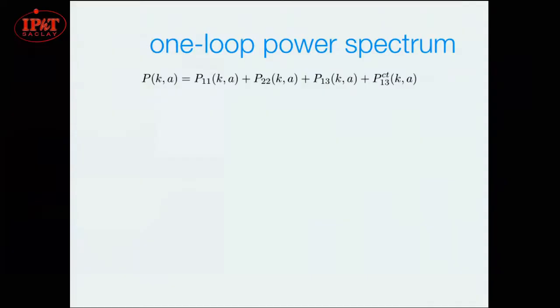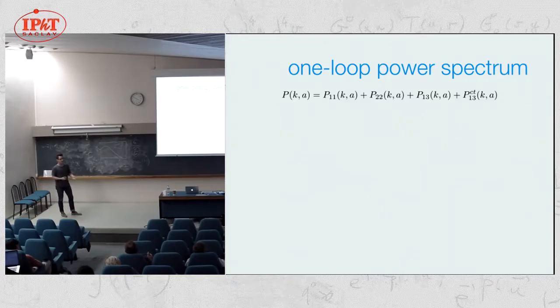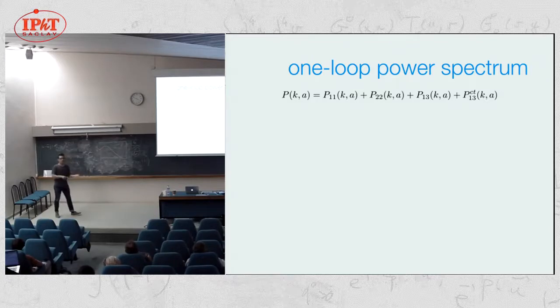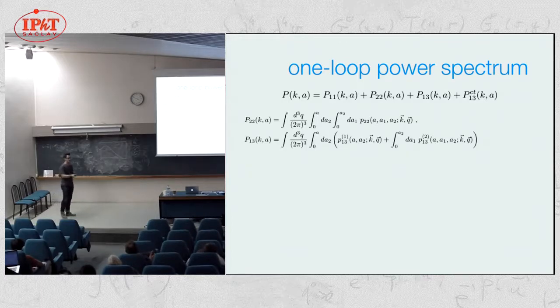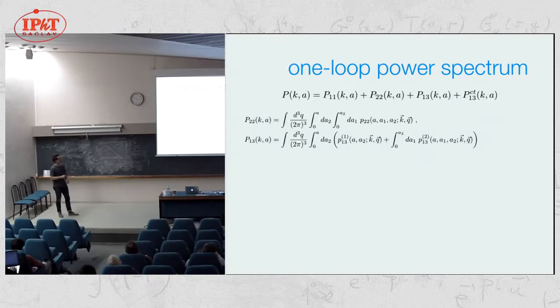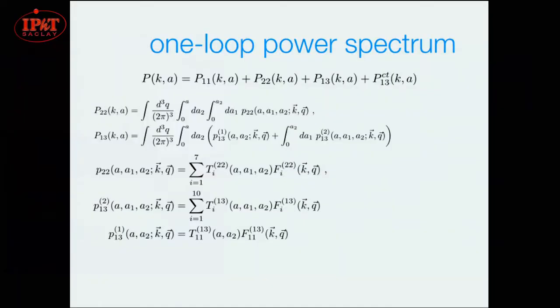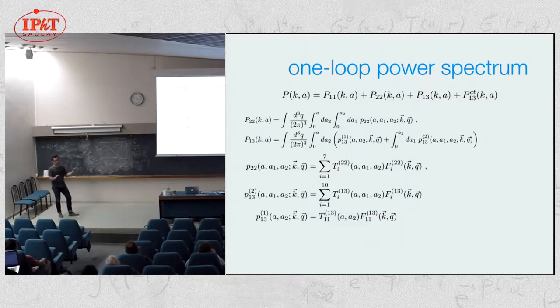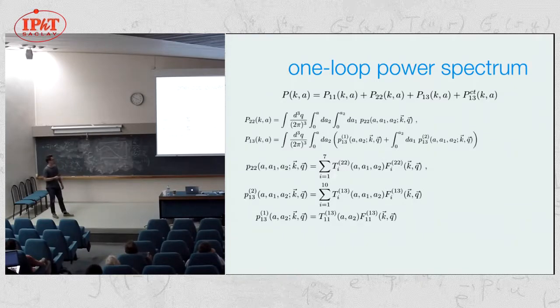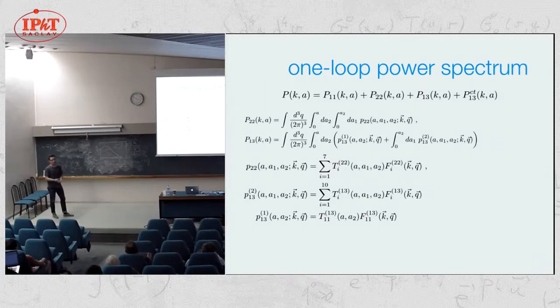P11 now should be the linear power spectrum coming from something like EFT CAMB or hi_class that includes the linear effects of dark energy. Then we compute the loop corrections P22 and P13. Because we have these Green's functions, there's no simple time dependence. That's why we have to integrate over momentum and time. These terms always break up into factors of a time-dependent function times a momentum-dependent function, so we can do this calculation reasonably well because you can integrate the time separate from the momentum if you don't have a scale-dependent growth factor.